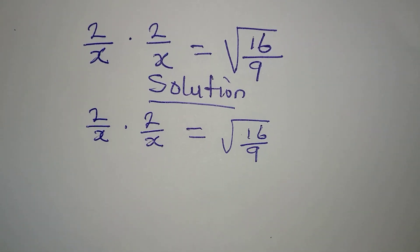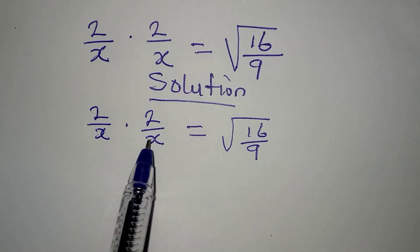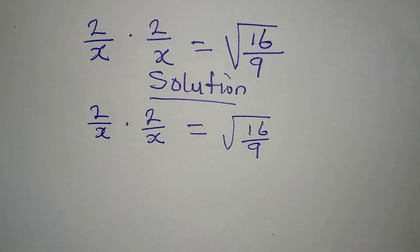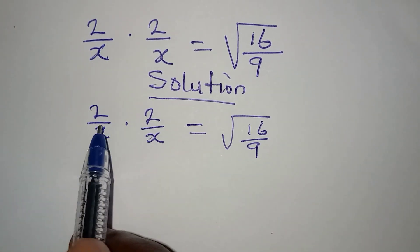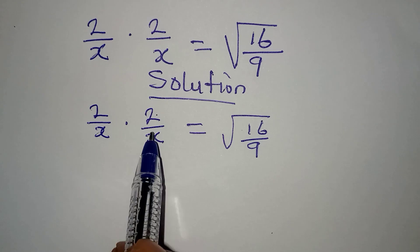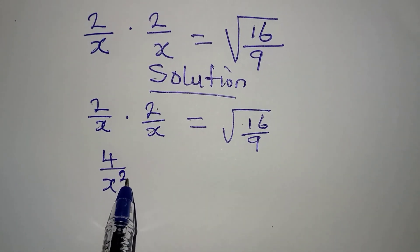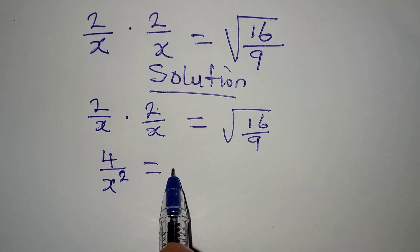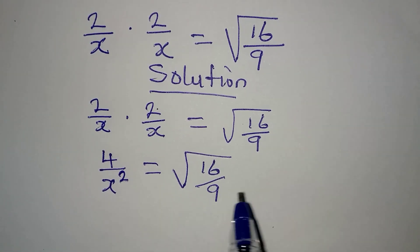You can be trying to think of the value of x, but let's solve this and see. Remember that in this case we can just multiply 2 by 2 and x by x, so we have 4 over x squared.